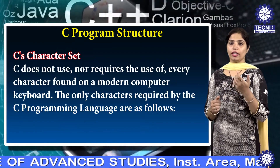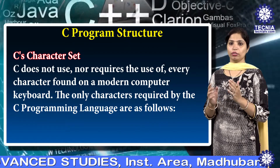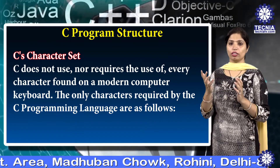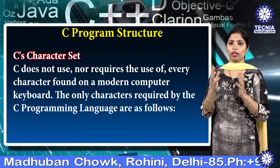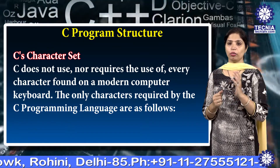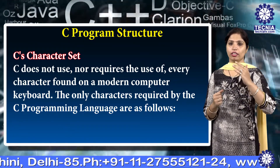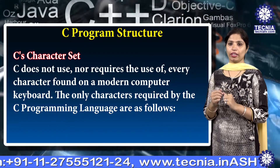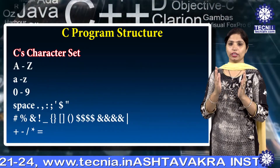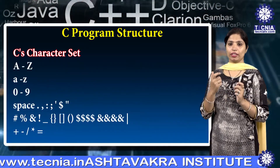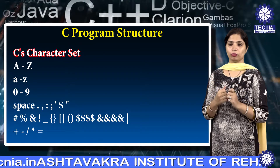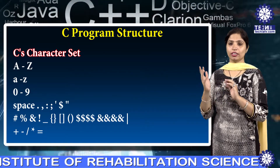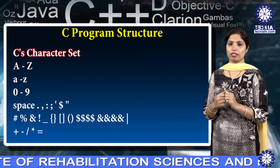C does not use nor require the use of every character found on a modern computer keyboard. The only characters required by the C programming language are A to Z in capital as well as small, the numeric digits, and some special symbols.